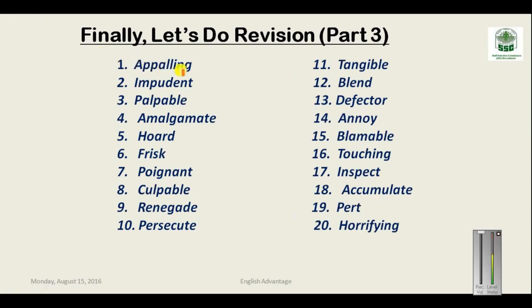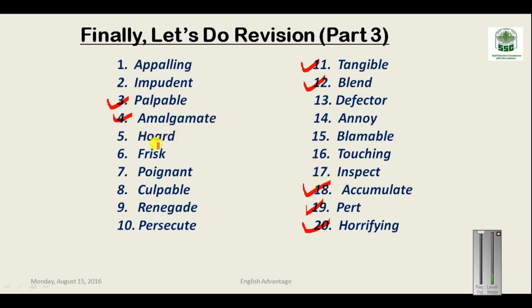Revision Part 2: Appalling means horrifying or awful. Impudent means disrespectful. Palpable is something tangible that you can see. Amalgamate means to mix or blend. Hoard means to accumulate. Frisk means to inspect or examine someone. Poignant means very moving or touching. Culpable — a person who is accused or blamable. Renegade is a defector or traitor. Persecute means to annoy someone.